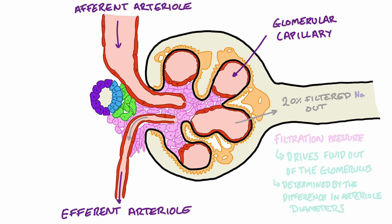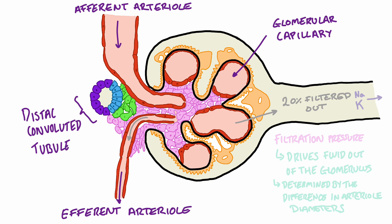From here the plasma, containing water and electrolytes such as sodium and potassium, enters the proximal tubule and continues through the nephron, reaching the loop of Henle and then the distal convoluted tubule. The distal convoluted tubule actually comes back into contact with the afferent and efferent arterioles at the junction of where they enter the glomerulus. The afferent and efferent arteriole along with the distal convoluted tubule form the juxtaglomerular apparatus.